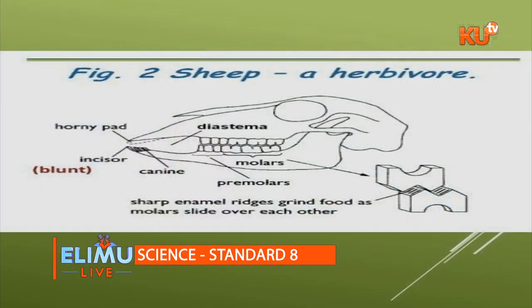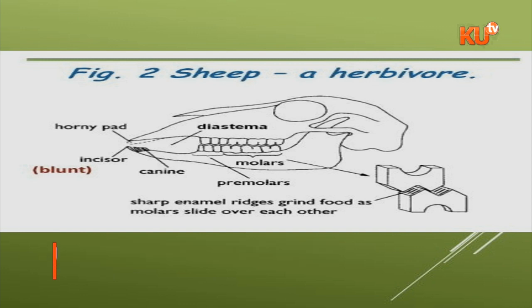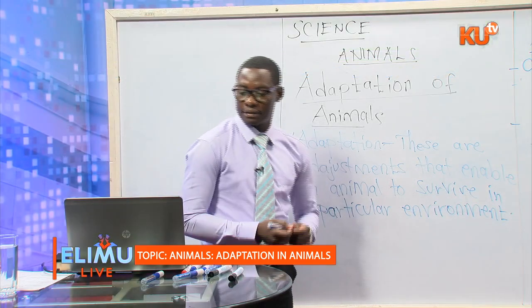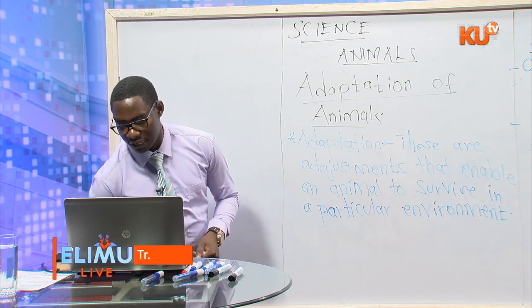This diagram shows the mouth of a herbivorous animal — the mouth of a sheep. You can see the honey pad on the upper jaw, the incisors on the lower jaw, then the canines, premolars, and molars. The diastema is just before the premolars — that's where the food turns. Those are the adaptations of a herbivorous animal, and an example is a sheep.